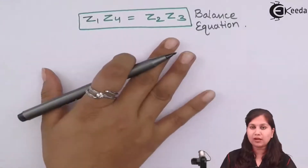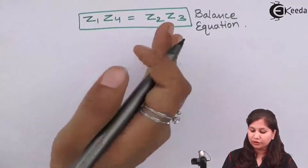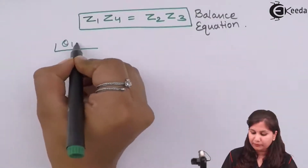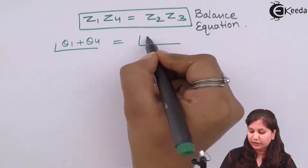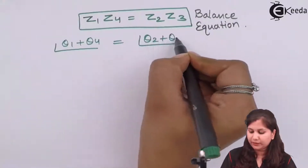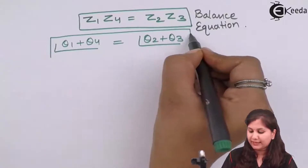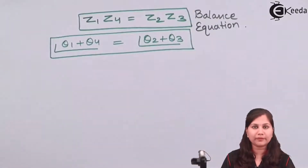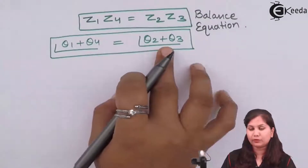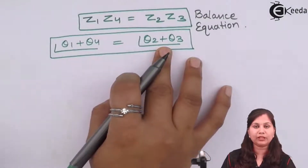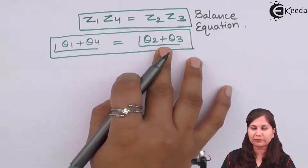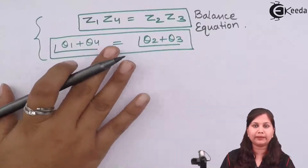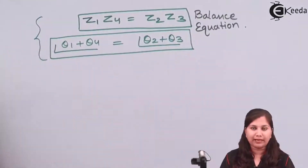Now, because we are also given the phase angles, the balance equation for the phase angles is: theta1 plus theta4 equals theta2 plus theta3. That is, the sum of the phase angles of the impedances in opposite pairs of arms must be equal. Both these balance equations have to be satisfied for the bridge to be balanced.